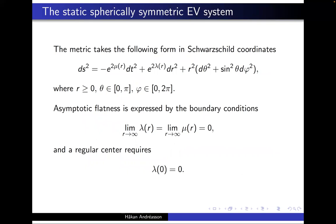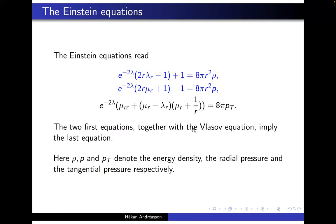I introduced the Einstein-Vlasov system last time. Now we do the same but in the even simpler case that we are only interested in static solutions. We again take this parametrization of the metric in Schwarzschild coordinates. For static solutions it is actually not so important which coordinates because it will basically be the same. We have as usual some boundary conditions to ensure the solution is asymptotically flat, and we want a regular solution where the center is regular, which requires that lambda at zero should be zero.